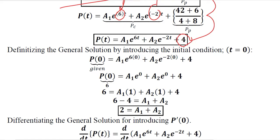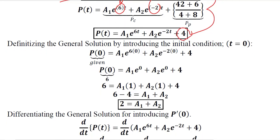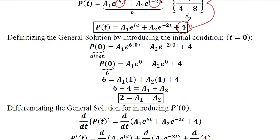Now, definitizing the general solution by introducing the initial conditions. You know that these A's, the arbitrary constants, are never welcome. We want to definitize them to get the definite solution. So initial condition can be introduced. Instead of T we can write 0, and when we do so the value of P0 is given in the question which was 6. This will be reduced to 1, so will be this. And we get an equation in terms of A1 and A2.